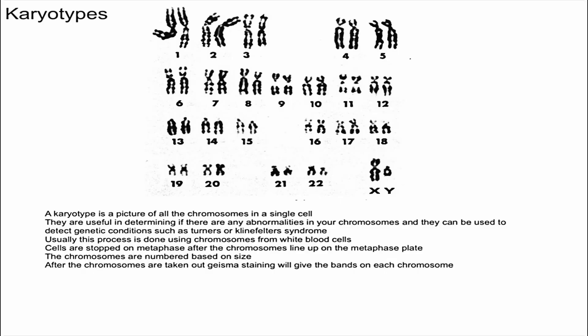In this video I'm going to explain how people make a karyotype and what it is used for. To begin with, let's get some background knowledge about what exactly a karyotype is. As you can see in this picture, this is a karyotype of a normal male — you can tell it's male because you see there's an X and a Y chromosome. Pretty much, a karyotype is a picture of all of the chromosomes in a single cell.